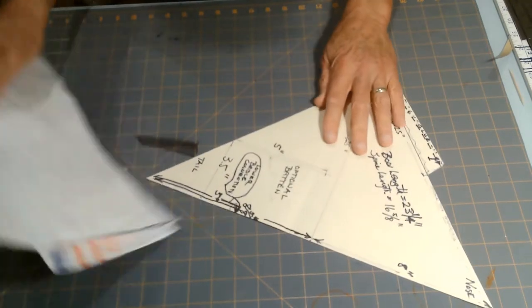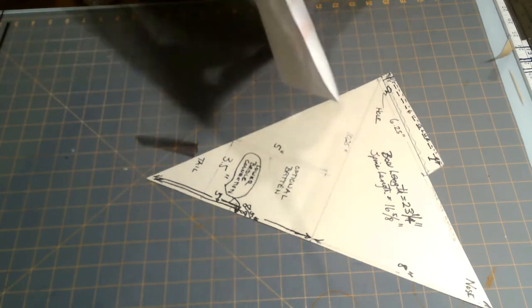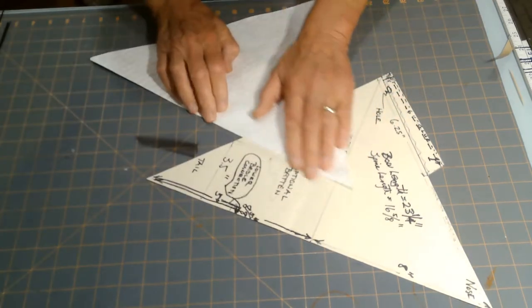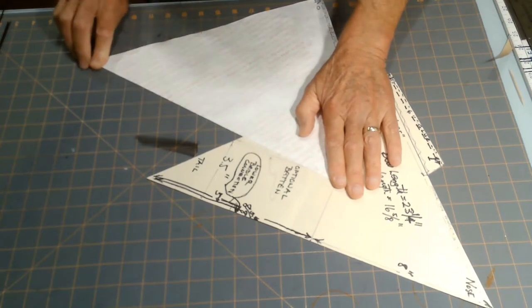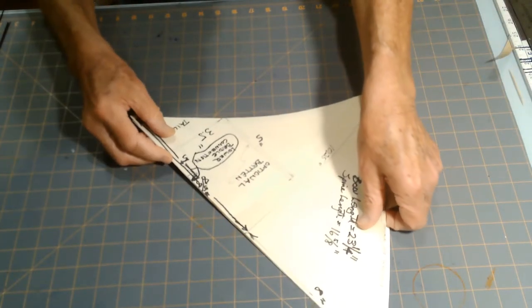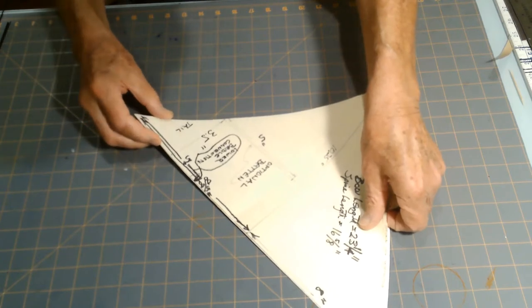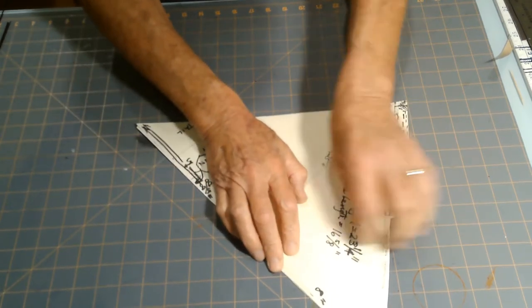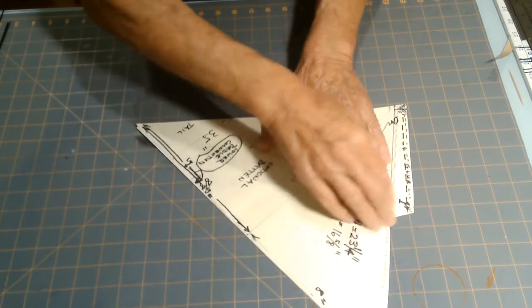And then they simply fold the material they're going to use, and that becomes the spine line right there. And they simply put the pattern, the template, align it to the spine line, and cut it out.